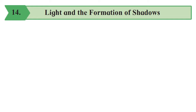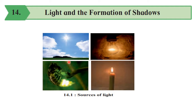We are studying chapter number 14, Light and the Formation of Shadows. In this, we have studied about what is light. What we have learnt is light makes things visible to us. If there is total darkness, we cannot see anything. Everything is visible to us because of the light. Then we have learnt about the natural sources of light and man-made sources of light.